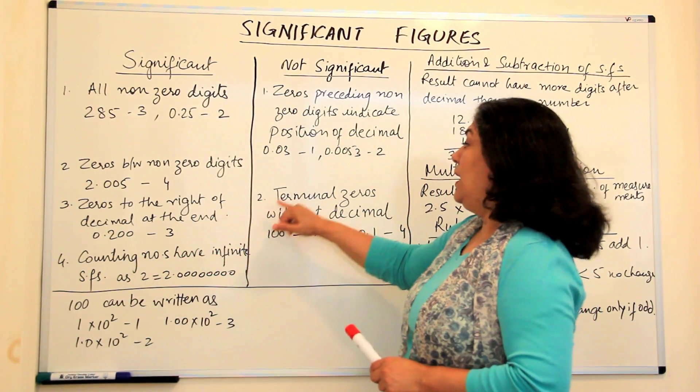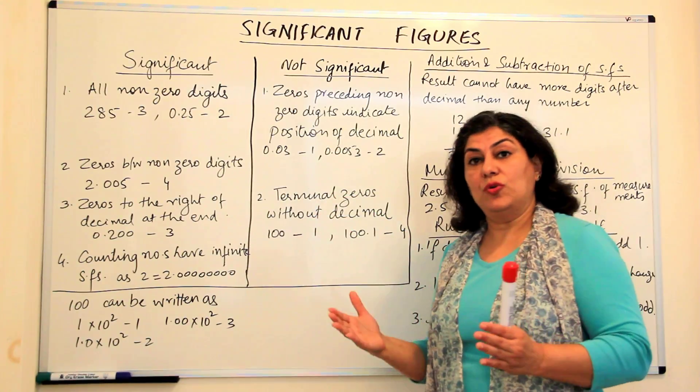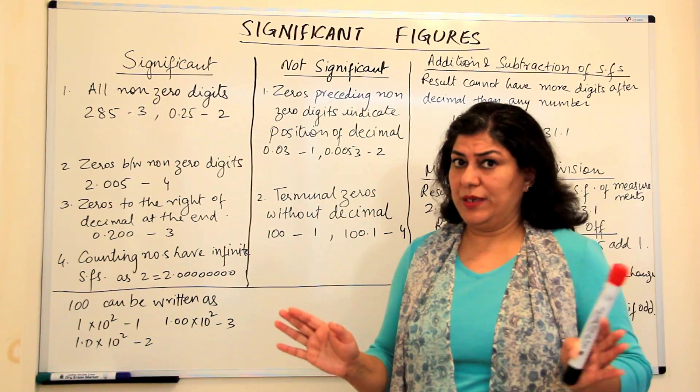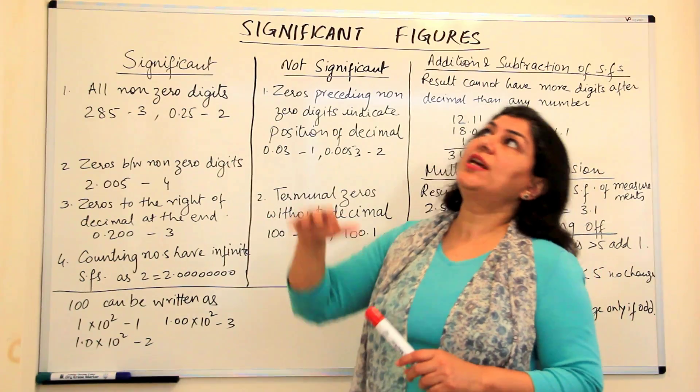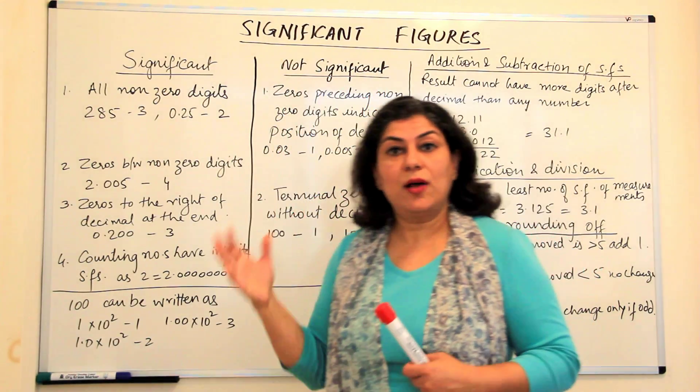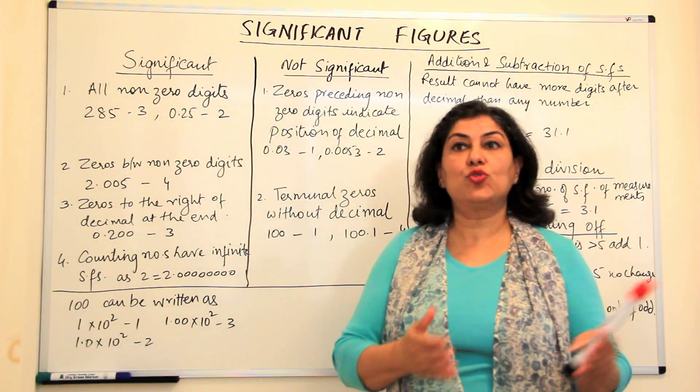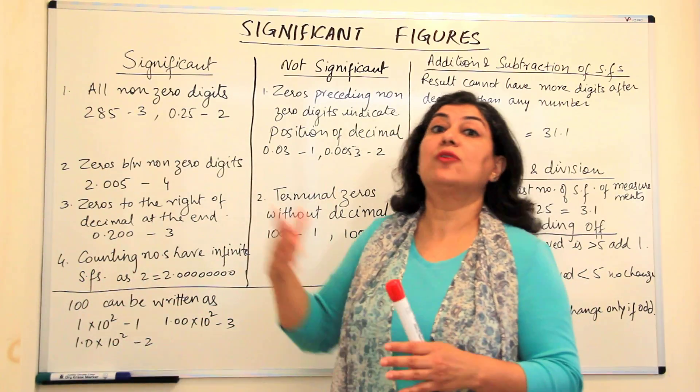On the other hand, if a reading ends in zeros, but there is no decimal in the measurement. For example, this thing happened 10,000 years ago. 10,000 years could be 10,001, it could be 10,020, it could be 10,200 also.